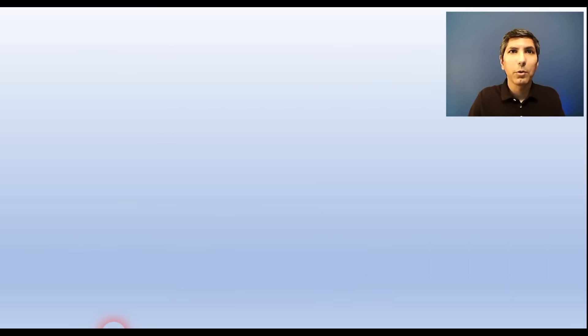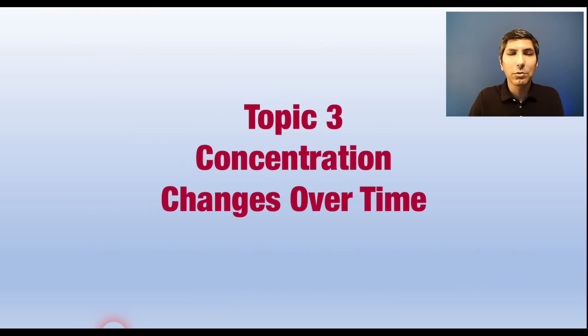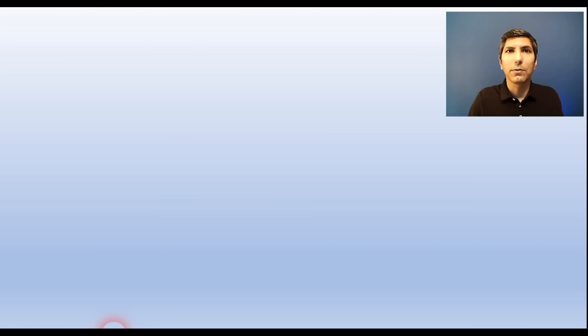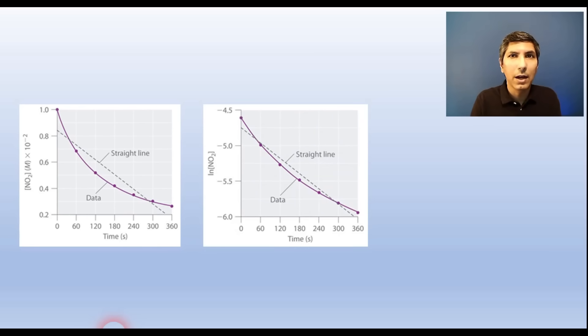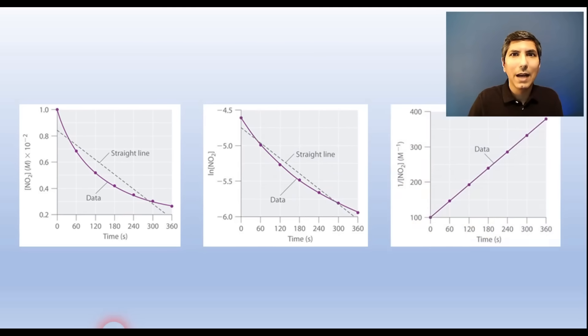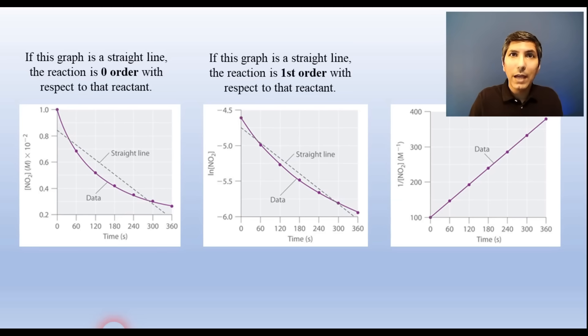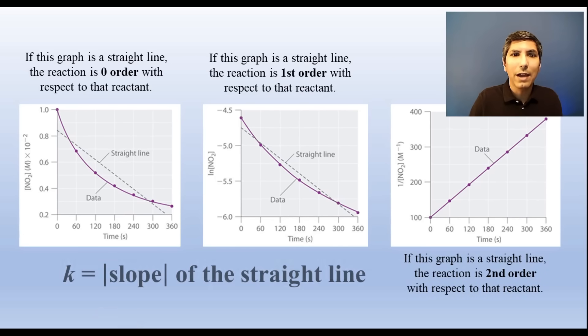We can also determine the order with respect to a reactant graphically. We do that by monitoring the concentration of the reactant as it decreases over time. Then make three graphs. One graph will be plotting time on the x-axis and the concentration of the reactant on the y-axis. Another graph will plot time on the x-axis and the natural logarithm of concentration on the y-axis. The last graph will plot time on the x and reciprocal of concentration on the y-axis. If the concentration versus time graph is a straight line, it will be zero order. If the natural log versus time graph is a straight line, it's first order. And if the reciprocal of concentration versus time graph is straight, then it's second order. For any straight line graph, the absolute value of the slope is equal to the rate constant.